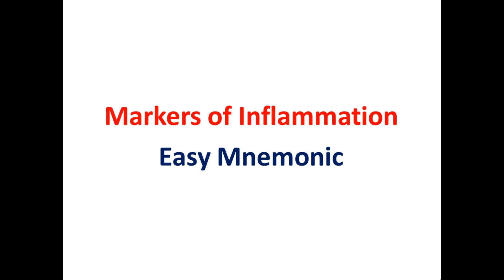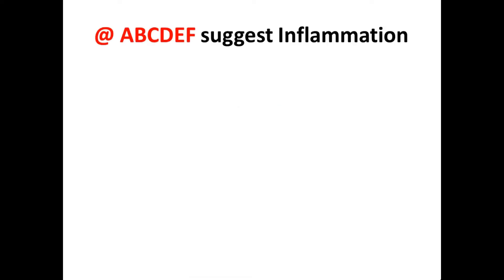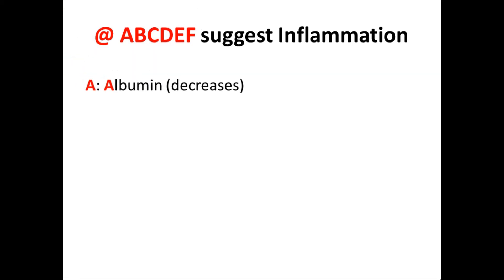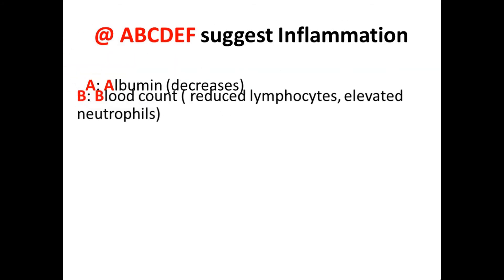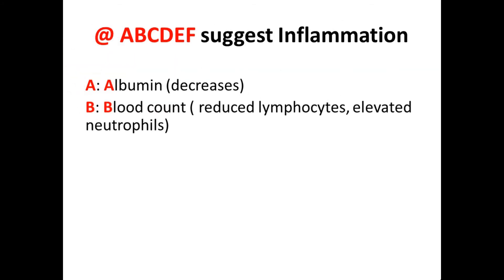The mnemonic is A, B, C, D, E, F for inflammation. A is albumin, which decreases during inflammation. B is blood count: lymphocytes decrease and neutrophils increase during inflammation.